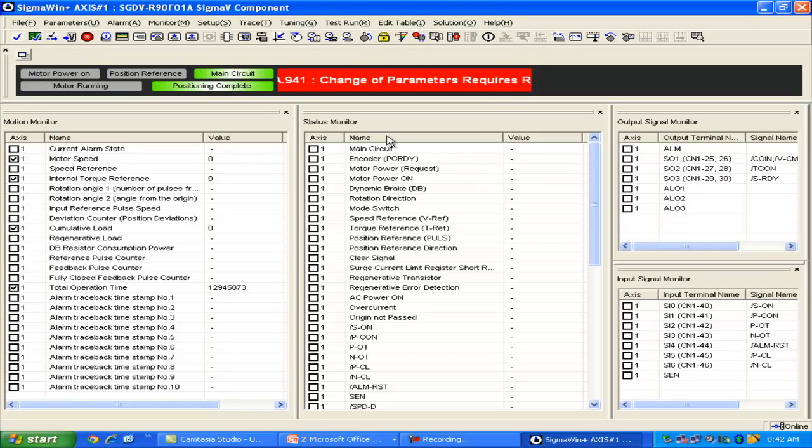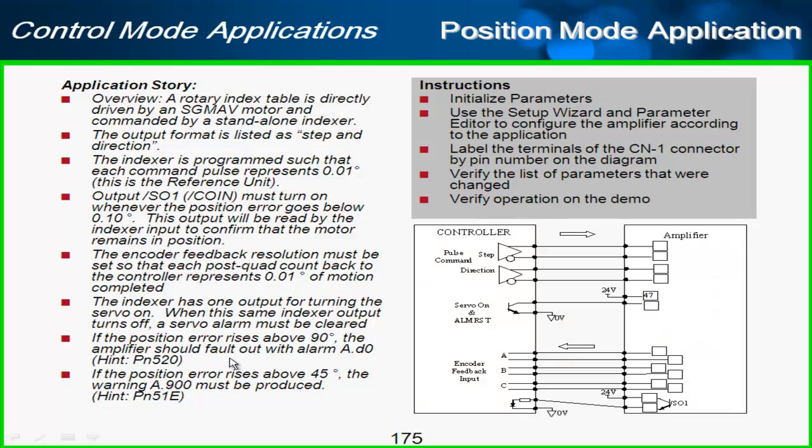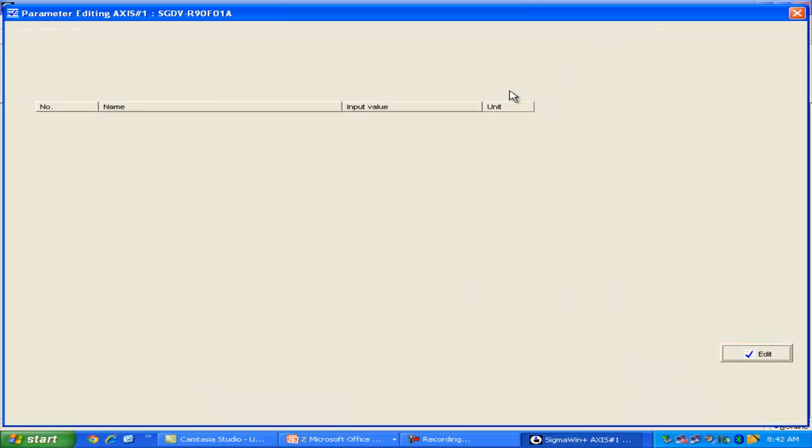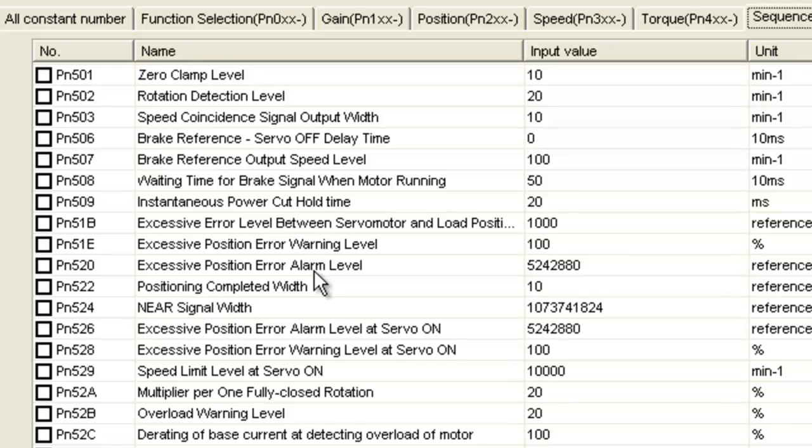And yeah, I could cycle power. But I'll just go ahead and finish up with those other two parameters in the parameters list. And those are parameters PN520 and 51E. Under sequence, PN520, excessive position error alarm level. Let's open that one.